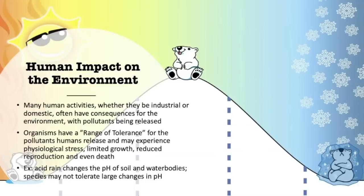Now look at our poor polar bears on the far left and far right. The far left polar bear is experiencing much hotter temperatures than is natural for him — definitely outside of his range of tolerance. The polar bear on the right is experiencing very, very cold temperatures, even ridiculously cold for a polar bear. Both the left and right sides of the bell curve are outside the range of tolerance, where species will begin to experience physiological stress, limited growth, and possibly even death if it is severe enough.